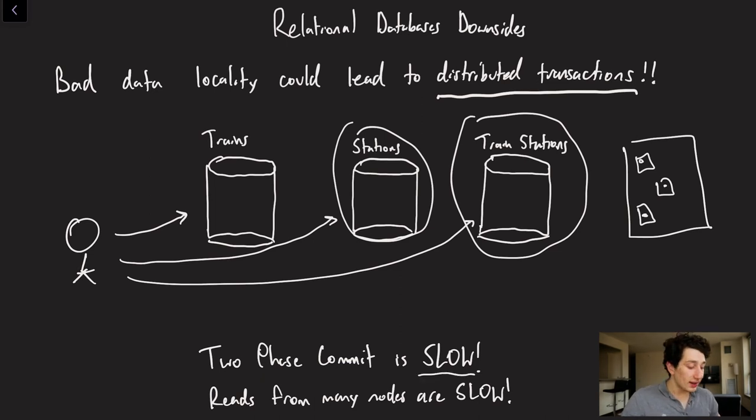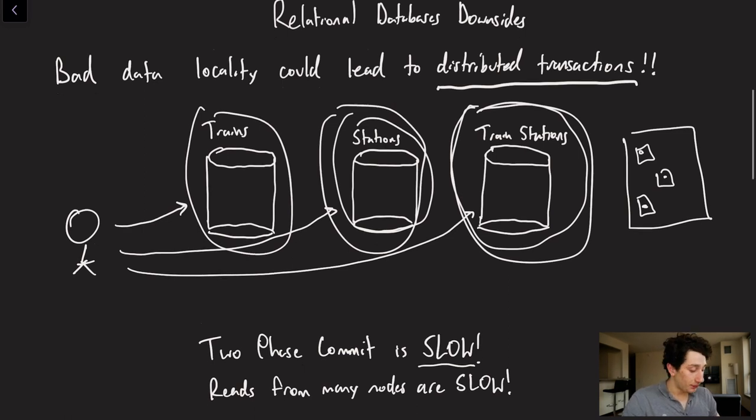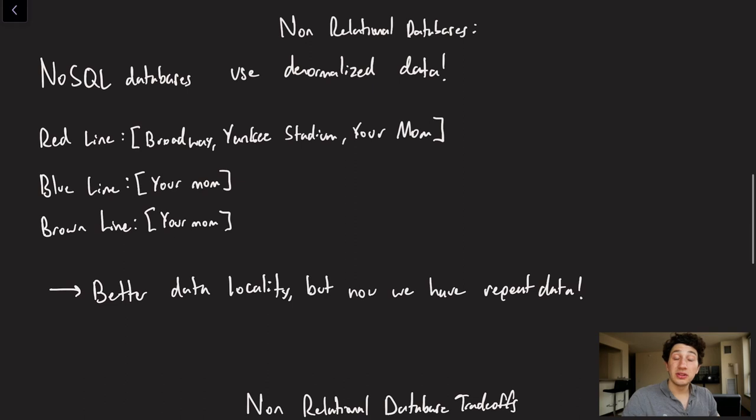Even if we're not performing writes, if I simply want to perform a join, now I have to read from the trains table, the stations table, and the train stations table. And as a result of that, my reads are going to multiple different systems. That's just a lot of extra latency and so distributed reads are also going to be slow. So what can we do to actually mitigate the cost of having poor data locality? Well, we could organize our data differently so that we have better data locality, and the way we would do that is with a non-relational database.